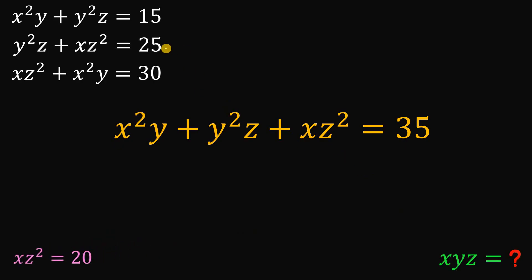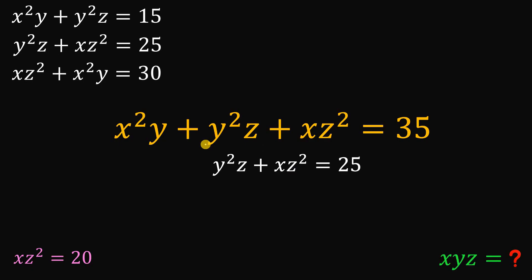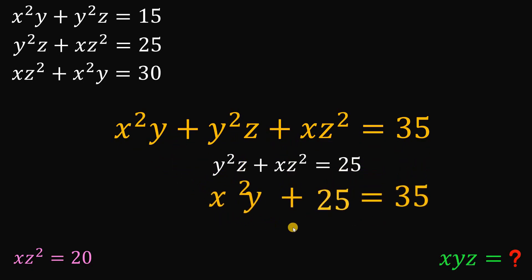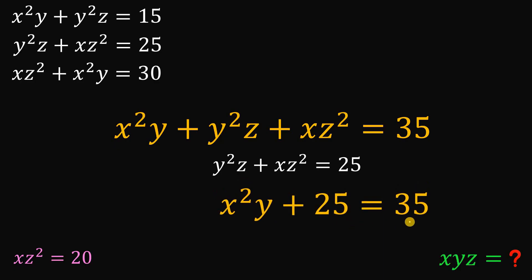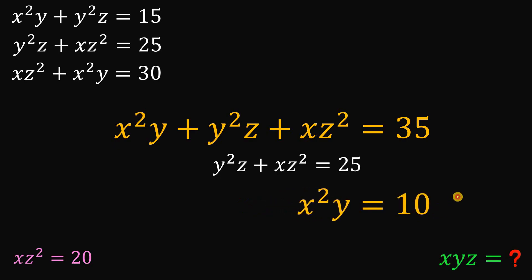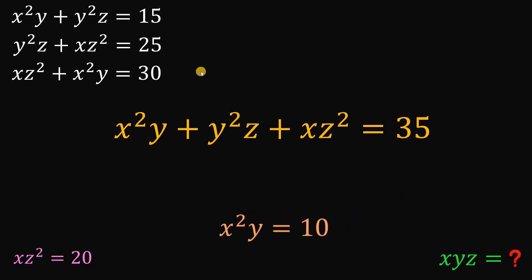Now, let's use the second equation, which says that y squared z plus xz squared equals 25. So these two terms add up to 25, meaning x squared y plus 25 equals 35. Subtracting both sides by 25, we get x squared y equals 10. Let's set aside this result.